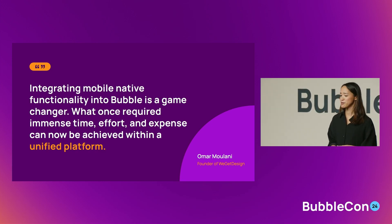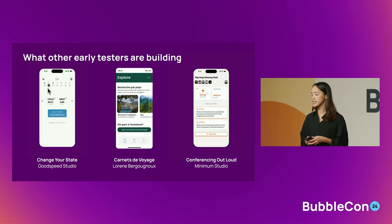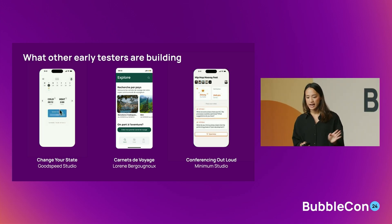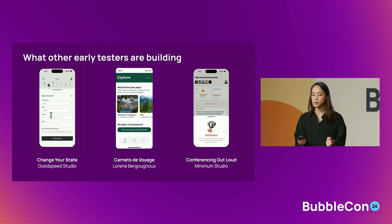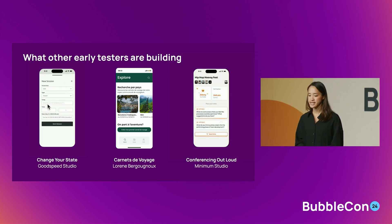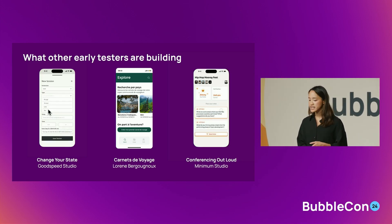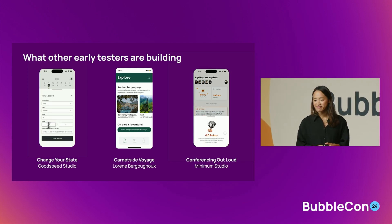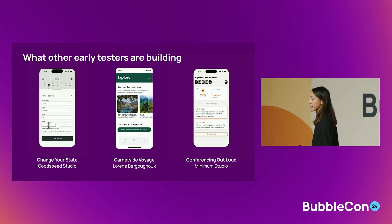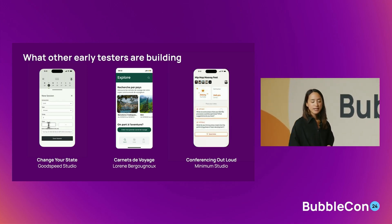Besides marketplaces and social platforms, we're also seeing testers build other types of connections — including the relationship with yourself, your friends and family, and across organizations. On the left we have Changer State: Goodspeed Studio, another Gold Agency, teamed up with Move, a recovery studio based in the UK. They're building Changer State, an app on track to become the Strava for heat and ice therapy — tracking sauna heat exposure, cold plunge ice exposure, and offering guided immersions, a progress calendar, and gamification. They already have over 500 regular users and a successful funding round.